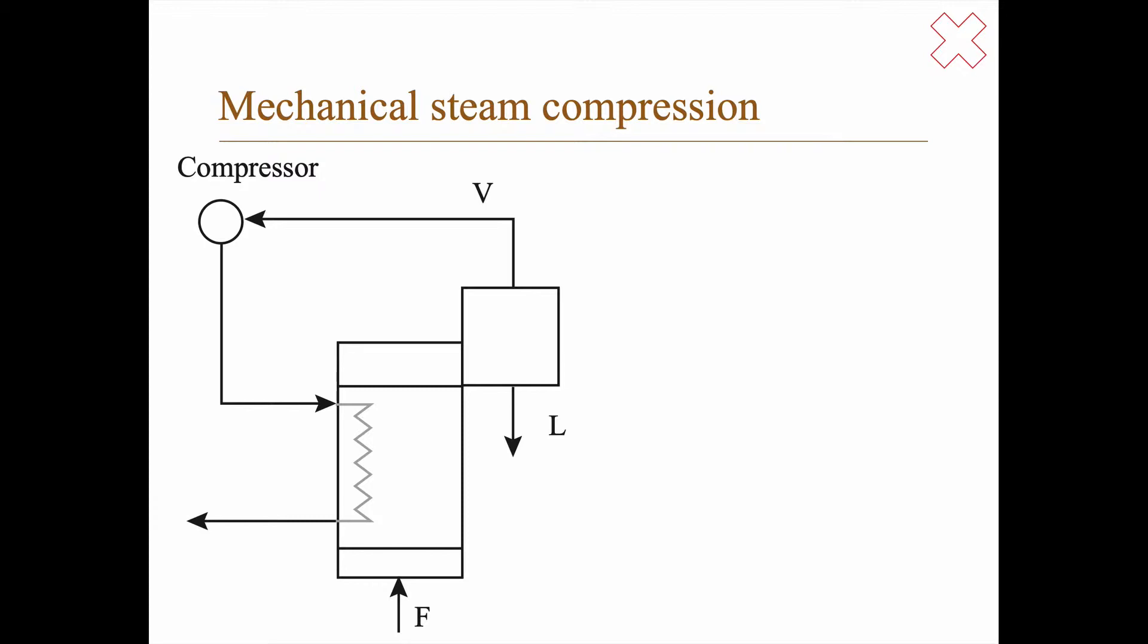In mechanical compression, you have the feed coming in here and the vapor is produced. You take that vapor and put it into a compressor, increasing the pressure of the steam, and then you can use that to evaporate your feed. This is not perpetual motion because you have to add energy in this compressor.